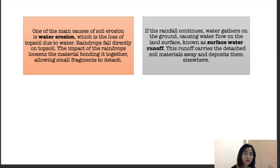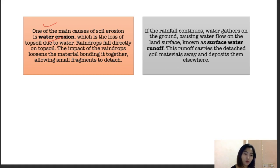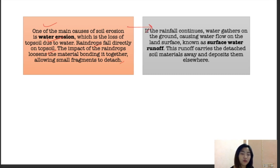There are two main causes of soil erosion: water erosion and surface water runoff. Water erosion is the loss of topsoil due to water — raindrops fall directly on the topsoil, loosening the material and allowing fragments to detach. Surface water runoff is an extreme form of water erosion, where water gathers on the ground, causing water flow across the land surface which carries detached soil materials away and deposits them elsewhere.